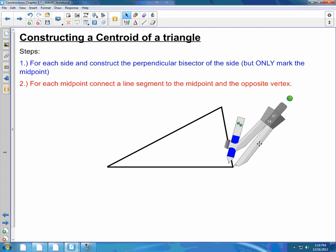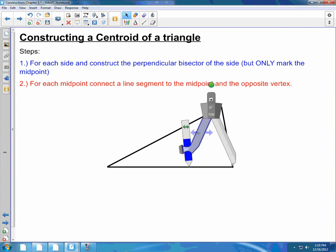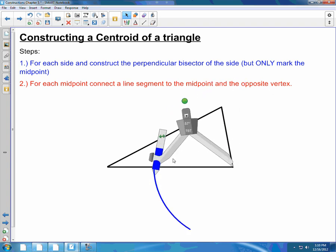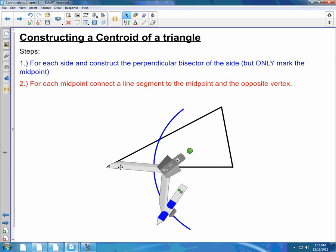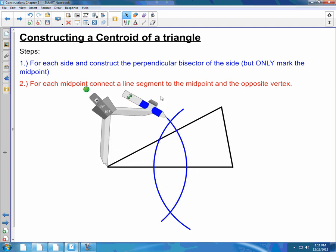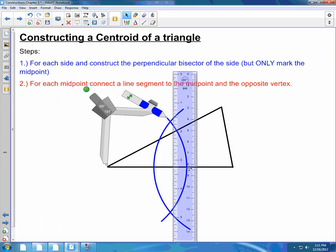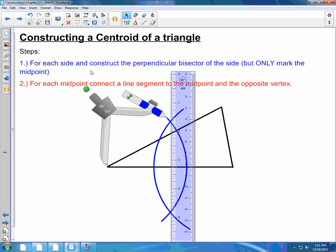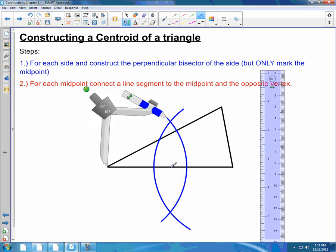So here, again, perpendicular bisector. You want to make sure that you open up your compass so that it's over half. Draw an arc below and above. Center on the other endpoint of that side. Draw an arc below and above. Now I'm going to take my ruler and mark where that midpoint is. You might want to clean up your picture because you're going to have a lot of arcs going on. So I cleaned up my arcs there.